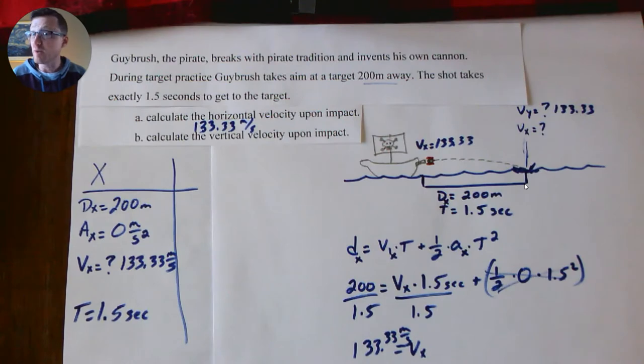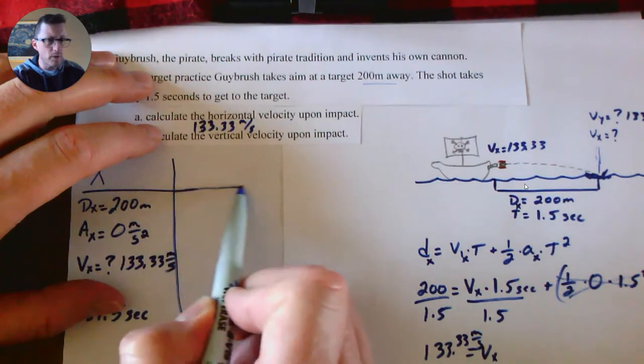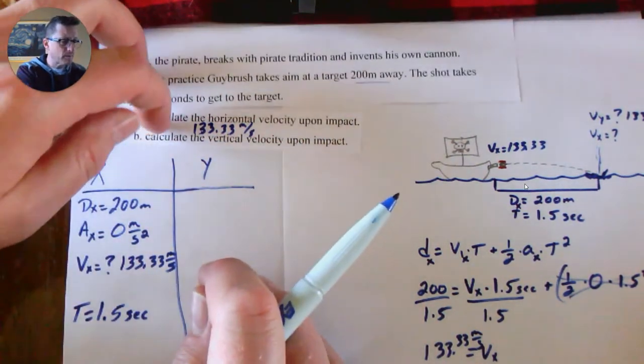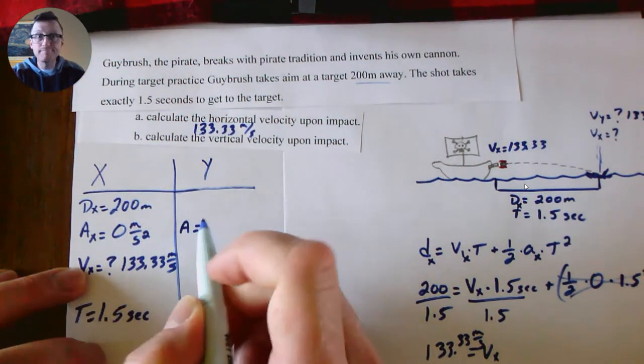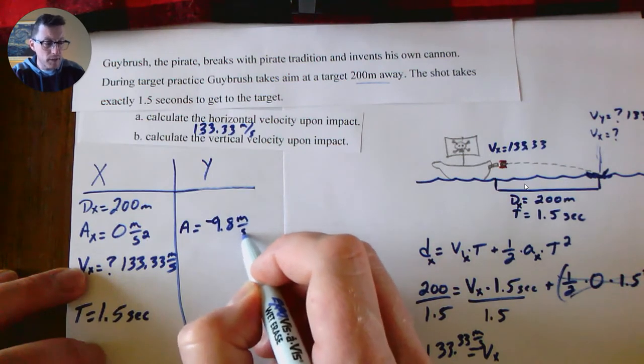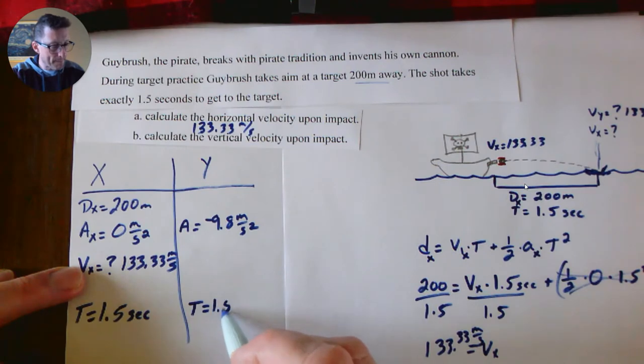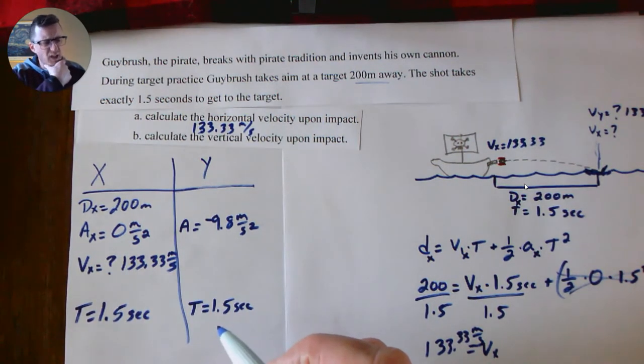All right, well what about the vertical velocity? Let's think about now y numbers. What do we know for y? Well, we know the acceleration. What is it? Negative 9.8. Why? Because of gravity. We know the time.